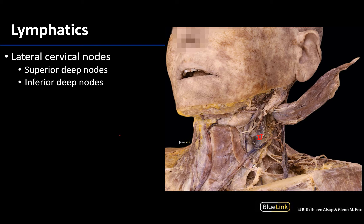These deep cervical lateral lymph nodes are going to be divided into a superior and an inferior group, and they are named relative to their position to the omohyoid. Right here you can see the superior belly of the omohyoid, here is that intermediate tendon, and then it follows into the inferior belly of the omohyoid. As the name would suggest, the superior deep nodes are going to be superior to the omohyoid and the inferior will be inferior.